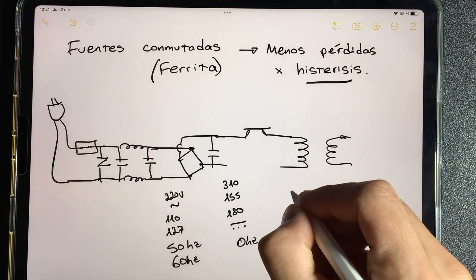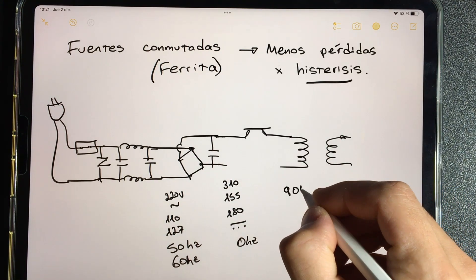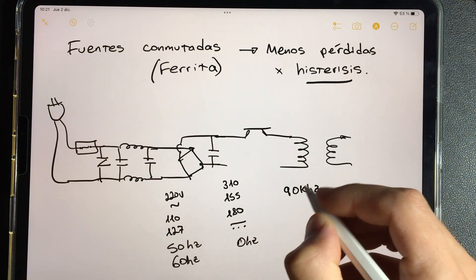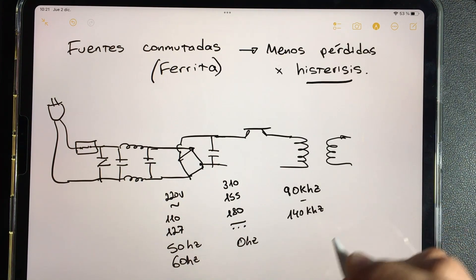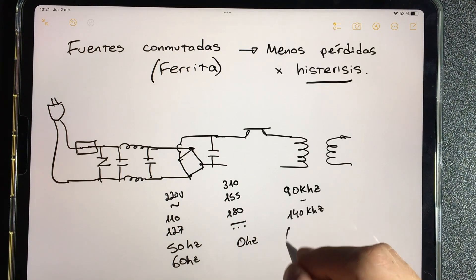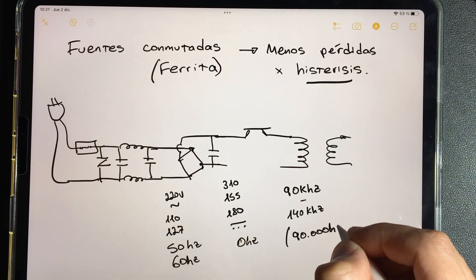So at this point, thanks to this switch or gate, you'll find a frequency of 90 to 140 kilohertz. What do I mean by kilohertz? 90 kilohertz are 90,000 hertz.